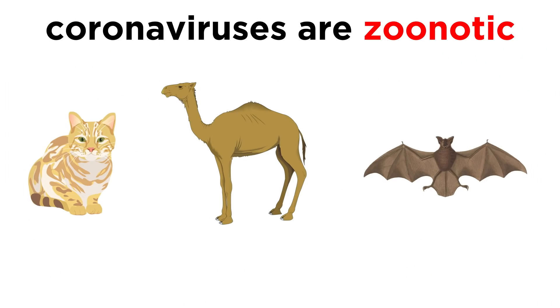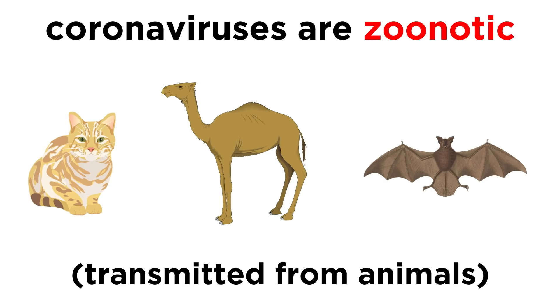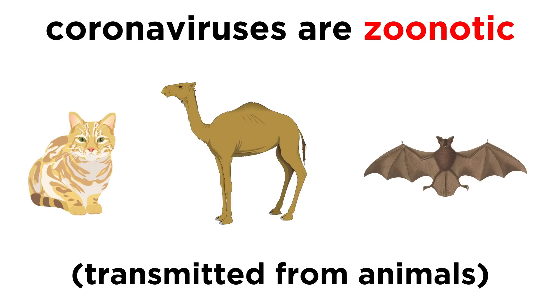In general, coronaviruses are zoonotic, which means they are transmitted from animals. We don't yet know what the animal was that carried this to humans. Previous coronaviruses have come from cats or camels, and in this case we believe it may have been bats.